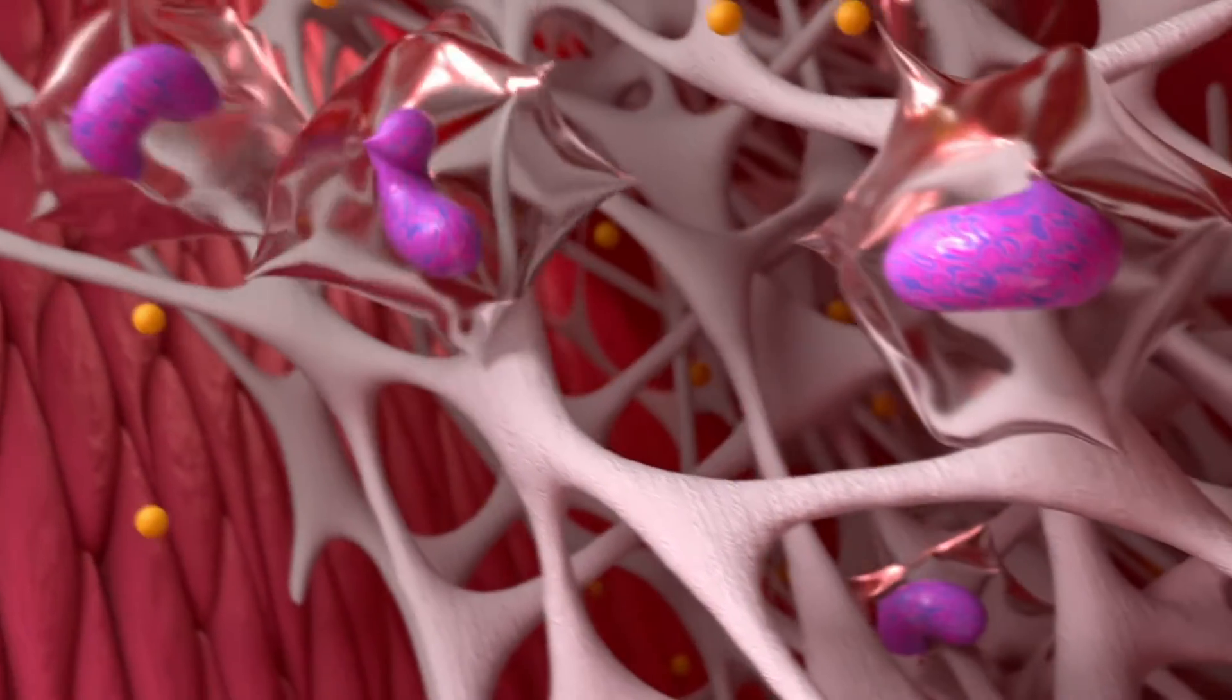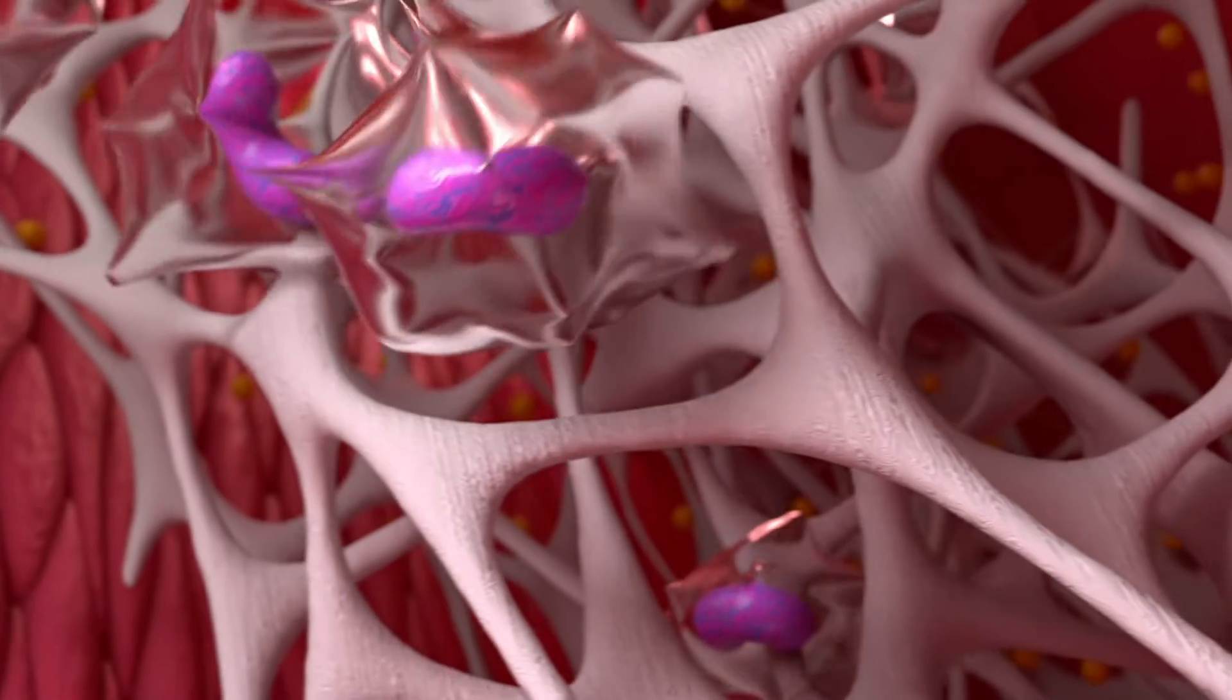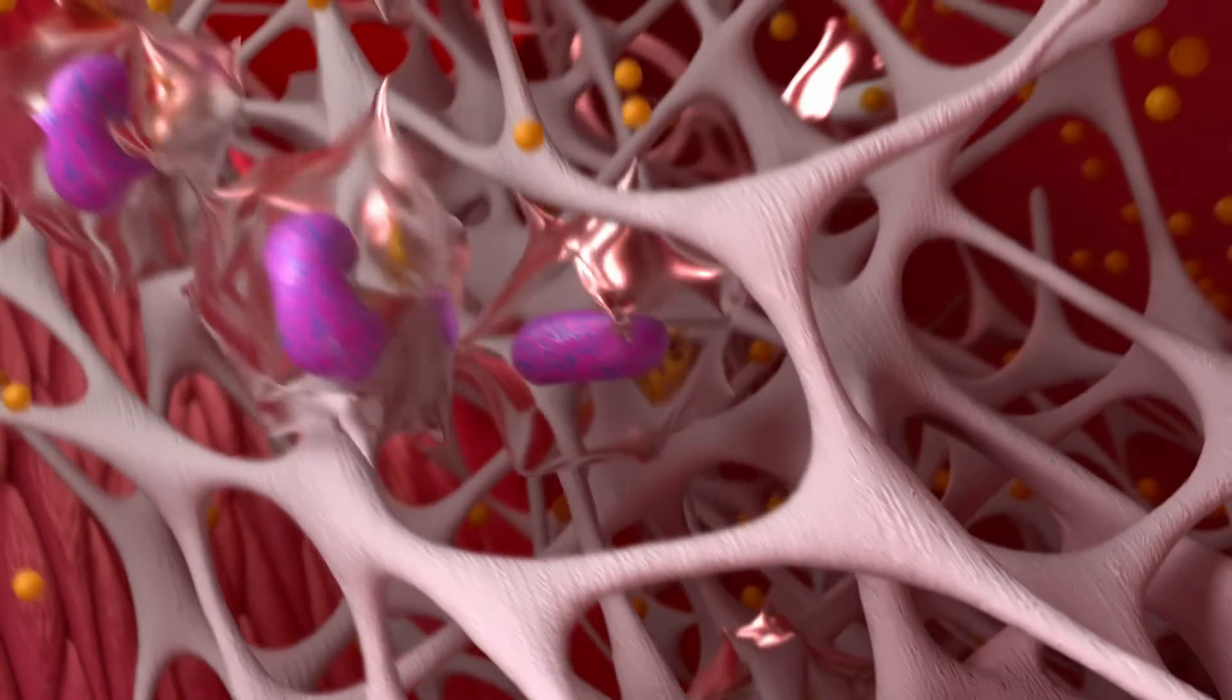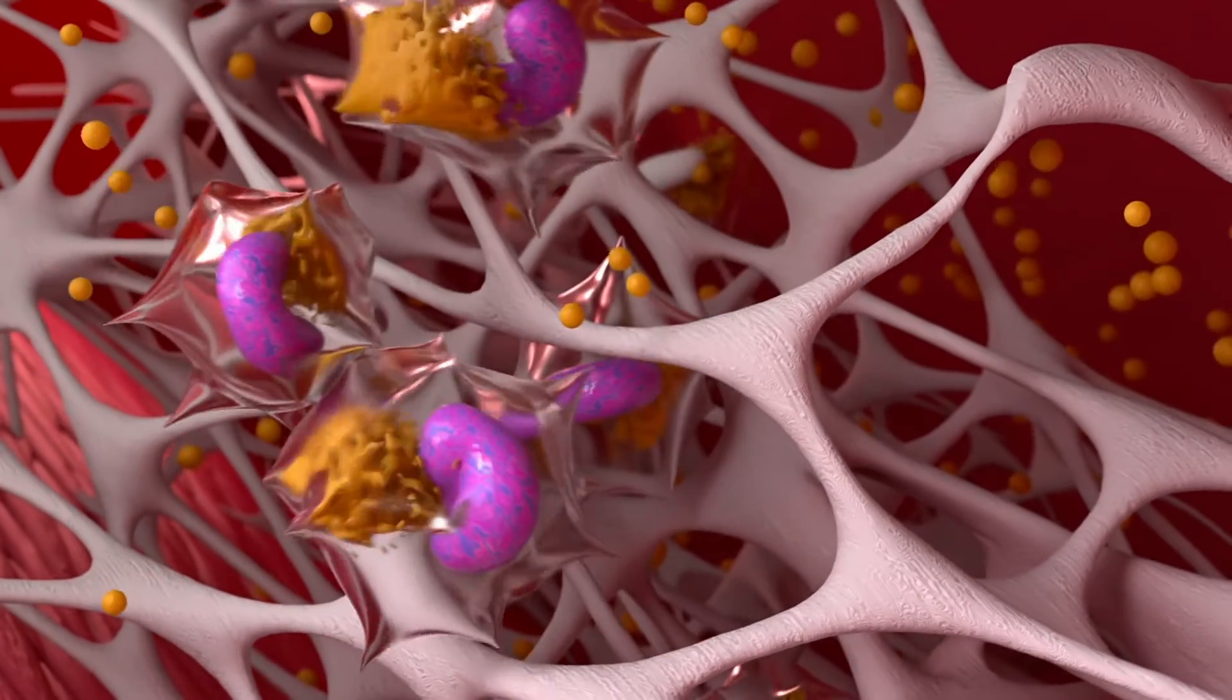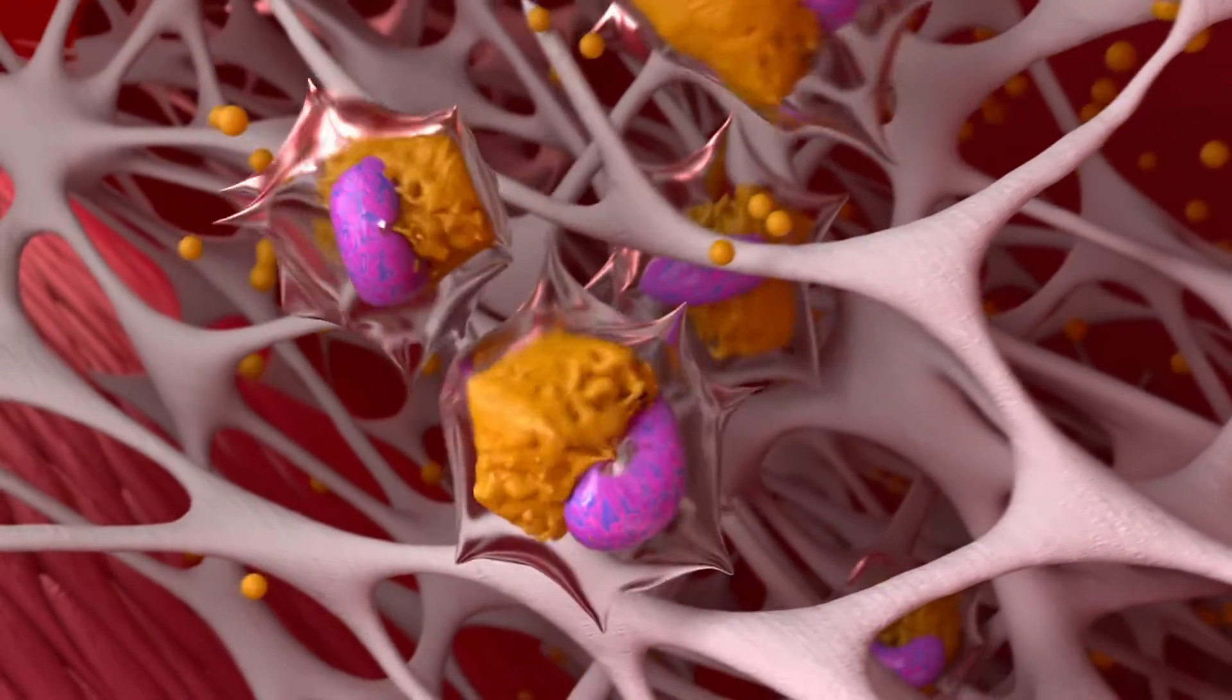Monocytes, which normally move freely in the bloodstream, migrate to the vessel wall and transform into macrophages, which begin to actively absorb cholesterol molecules.